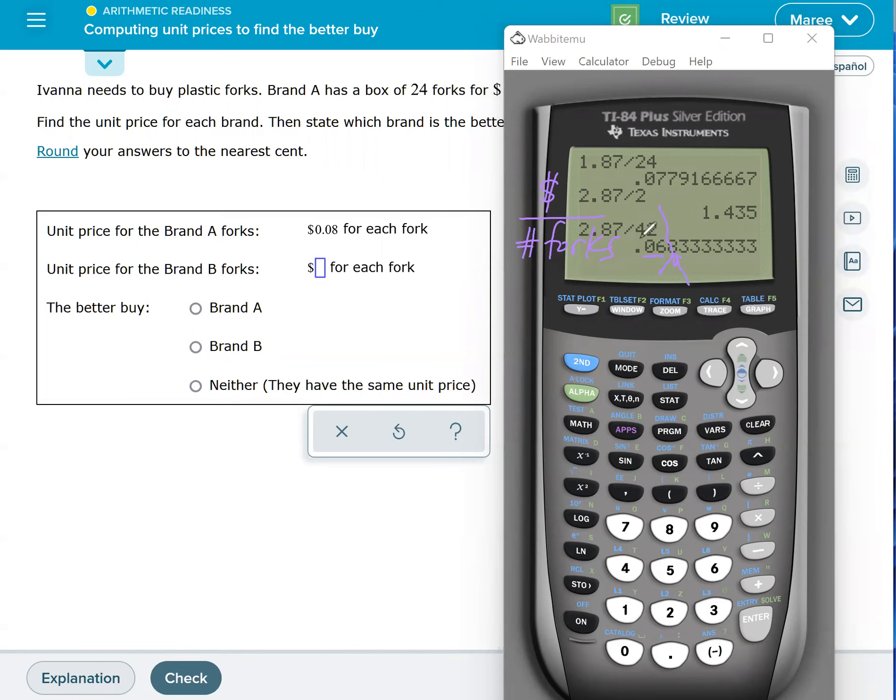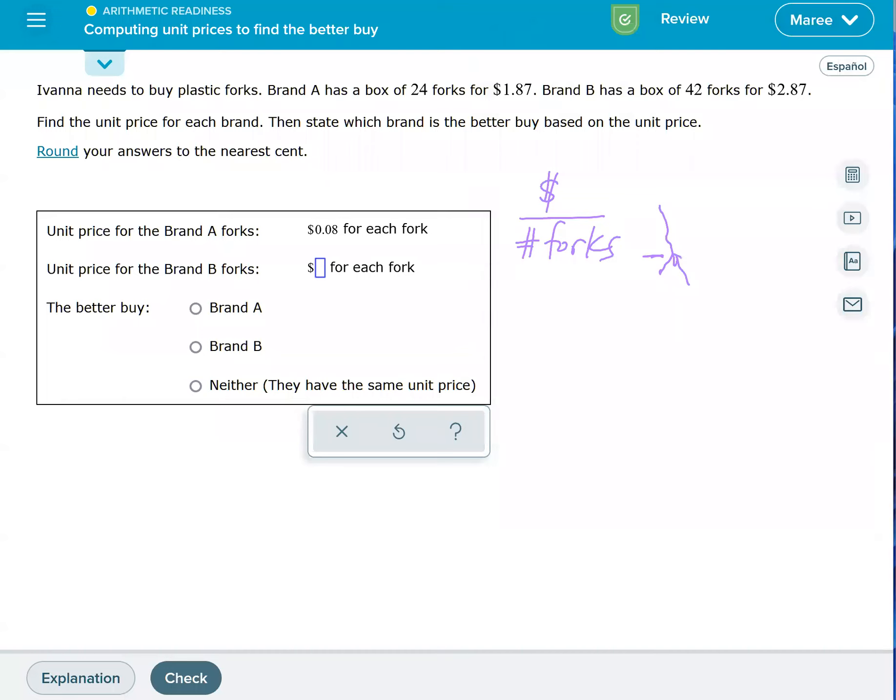you look at the eight and it says round it up to 0.07. So we're going to put in here 0.07 for our answer. The better buy is the one that costs less, which is Brand B.